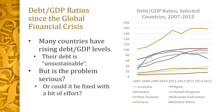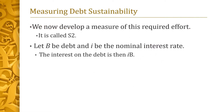In the years since the global financial crisis, the debt-to-GDP ratio has risen in many countries. By definition, this trend is unsustainable. But how unsustainable? That is, how much effort would be needed for a given country to return to sustainable debt? We now develop a measure of this required effort. The measure is called S2.